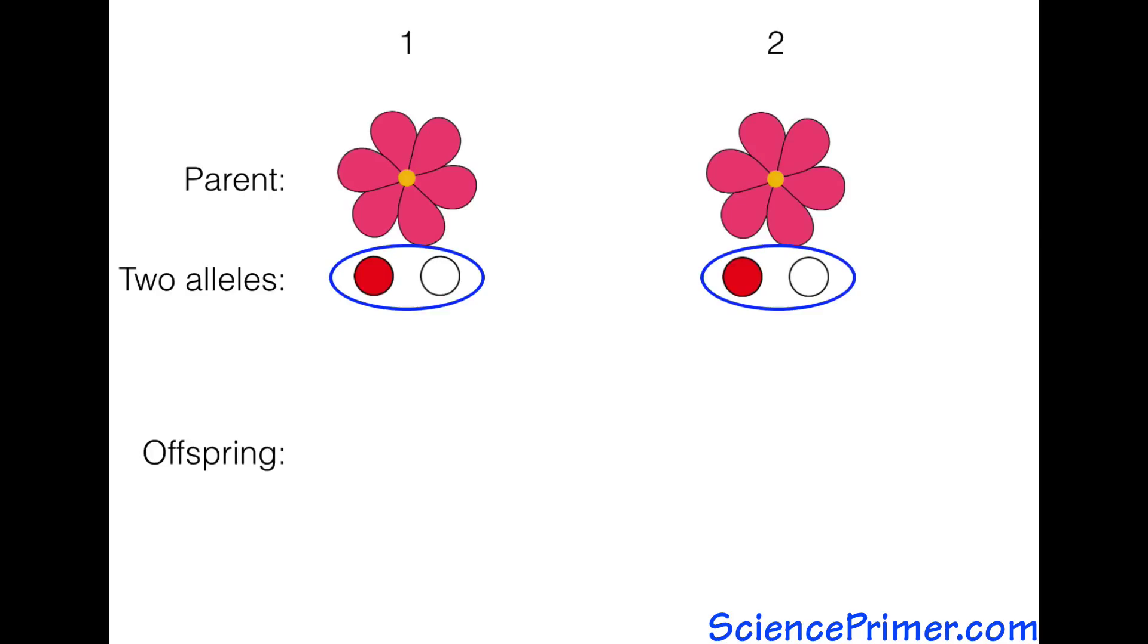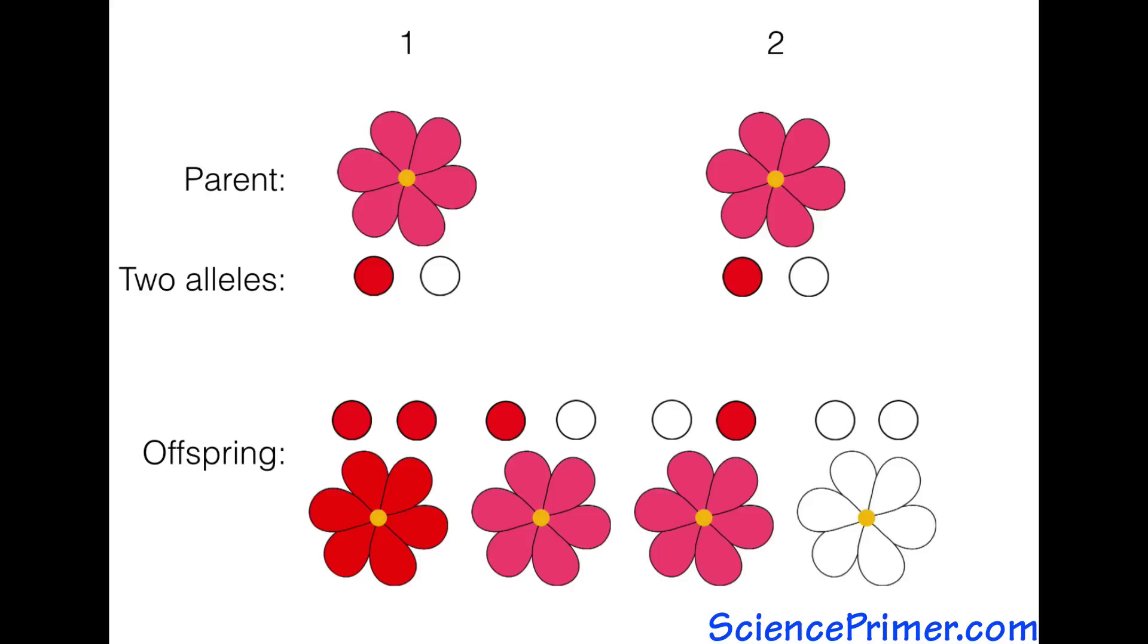Given two alleles from each parent, four allele combinations are possible. These combinations and their probabilities can be readily visualized using a Punnett square.